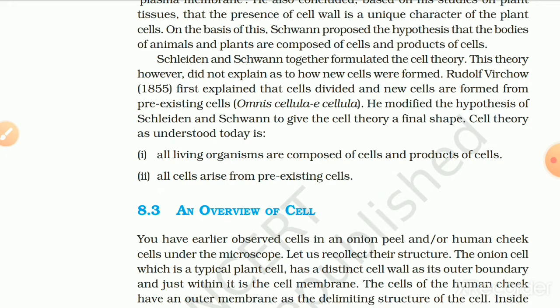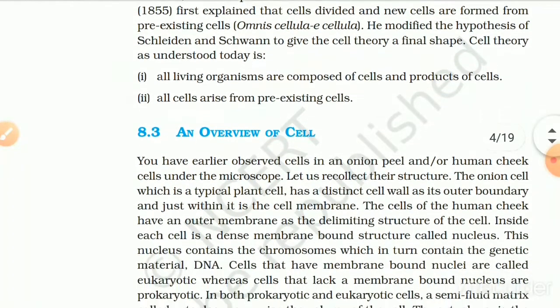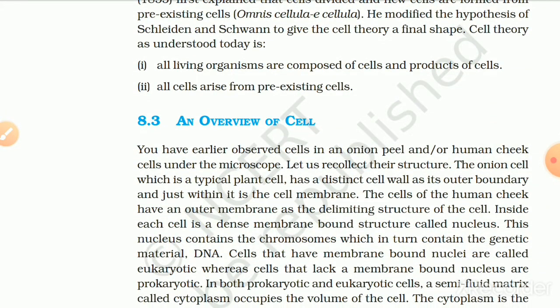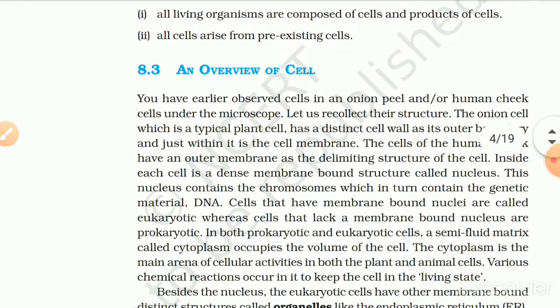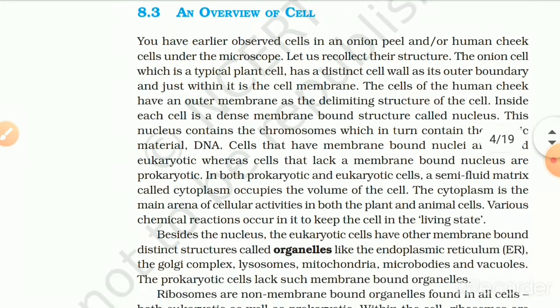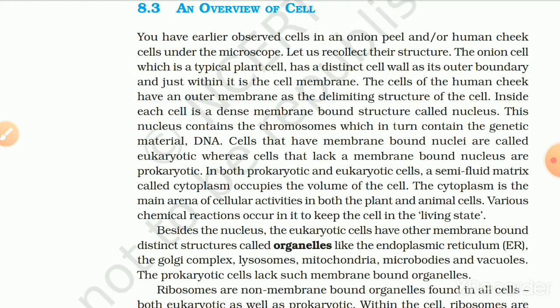This theory, however, did not explain how new cells were formed. Rudolf Virchow, 1855, first explained that cells divide and new cells are formed from pre-existing cells — omnis cellula e cellula. He modified the hypothesis of Schleiden and Schwann to give the cell theory its final shape. Cell theory, as understood today, states that all living organisms are composed of cells and products of cells, and all cells arise from pre-existing cells.